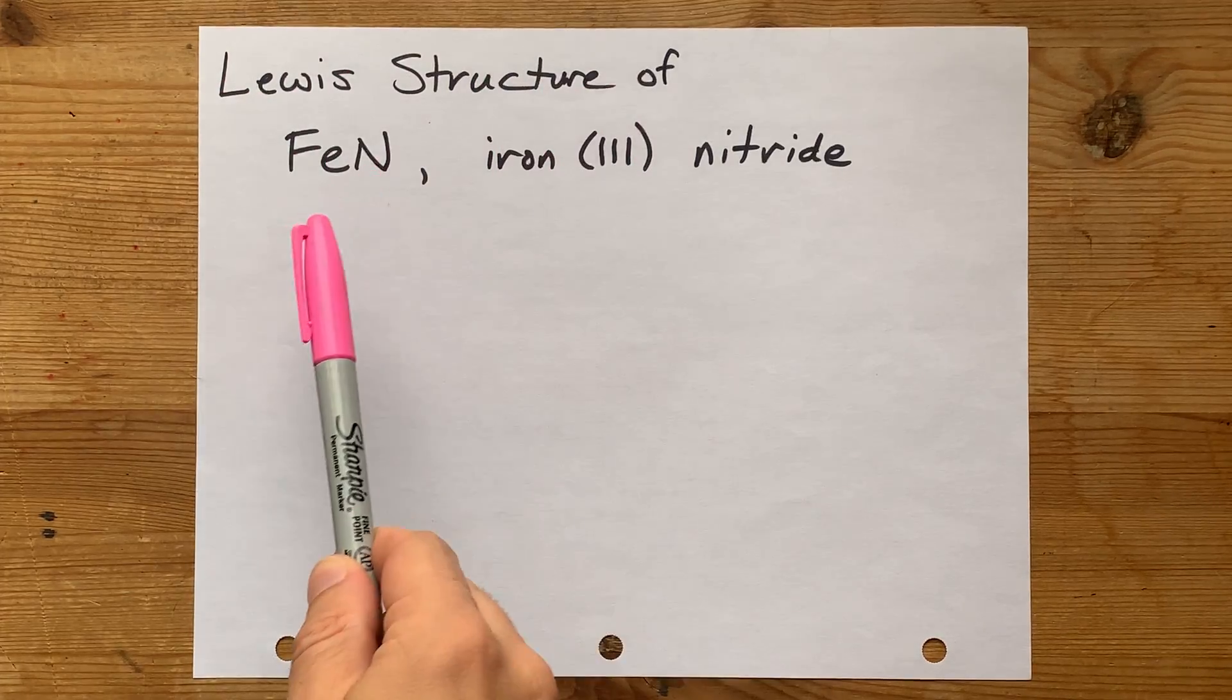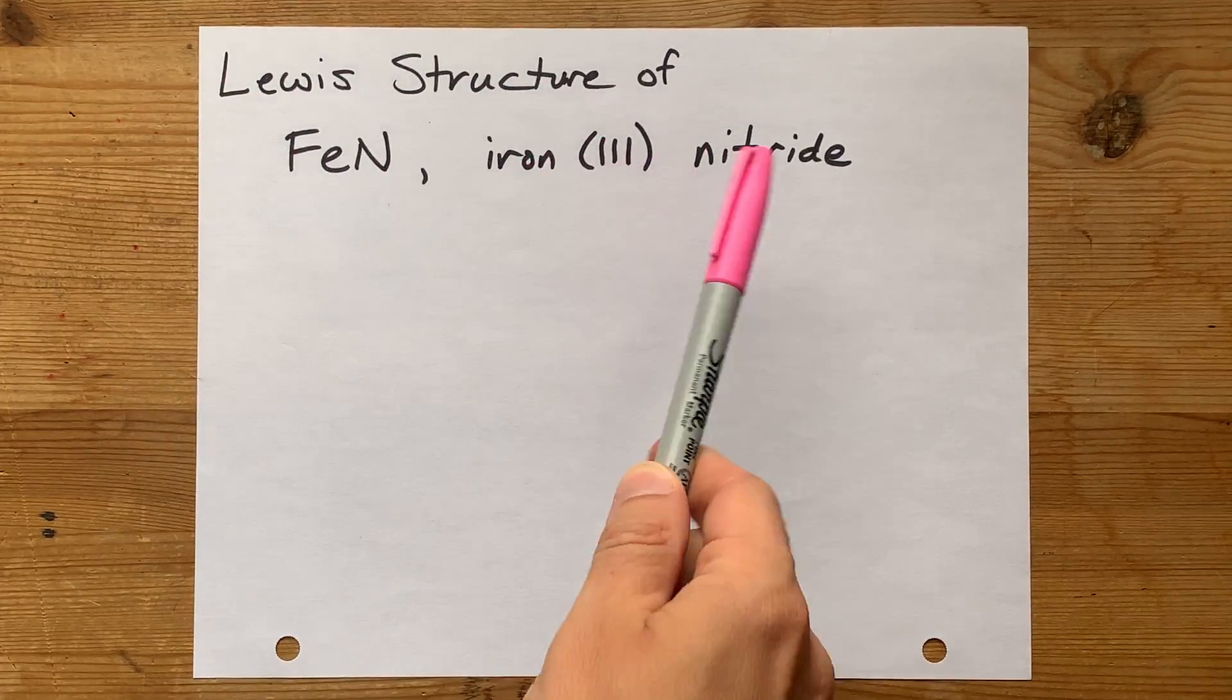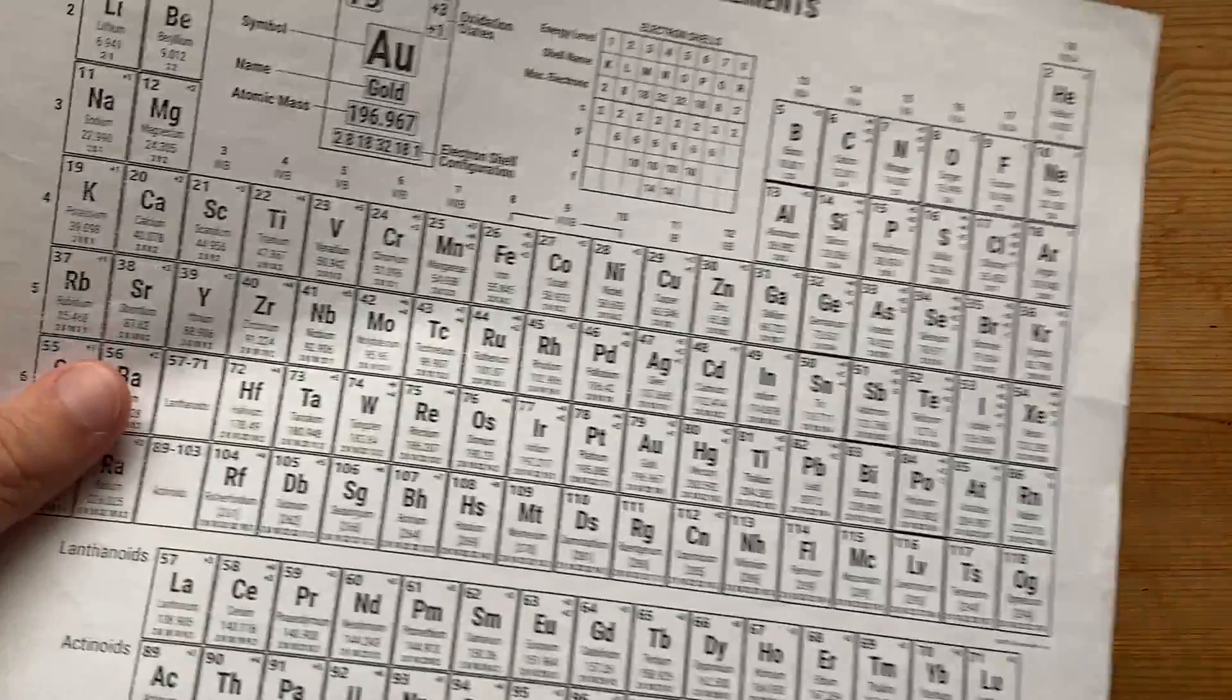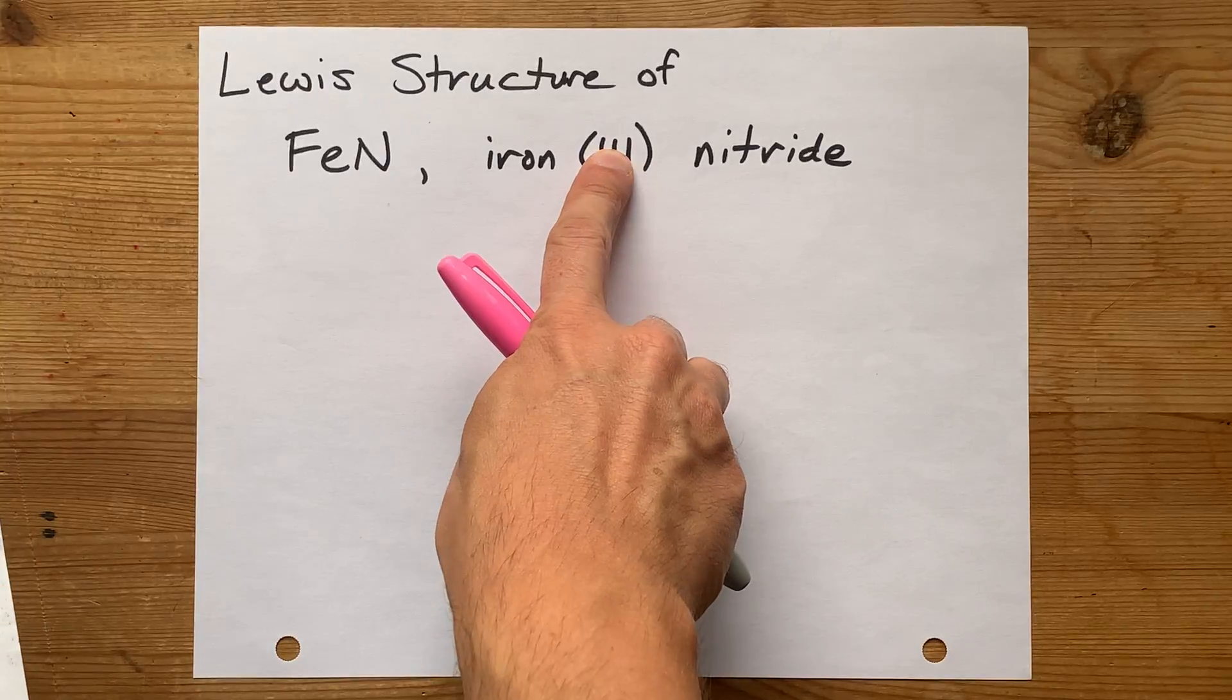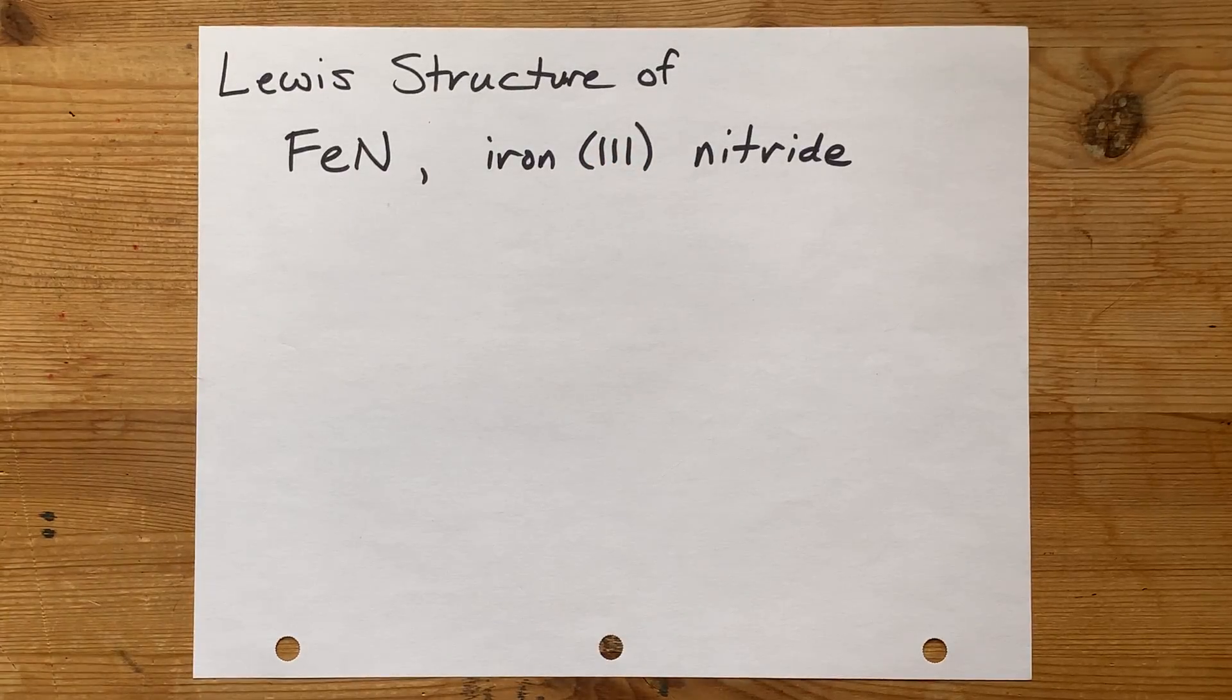We're going to draw the Lewis structure for FeN, which is iron III nitride. Step 1, agree with me that iron will be drawn with 3 valence electrons to start.